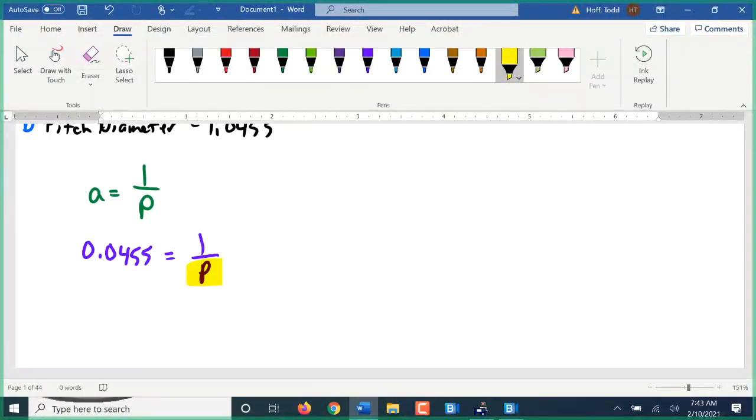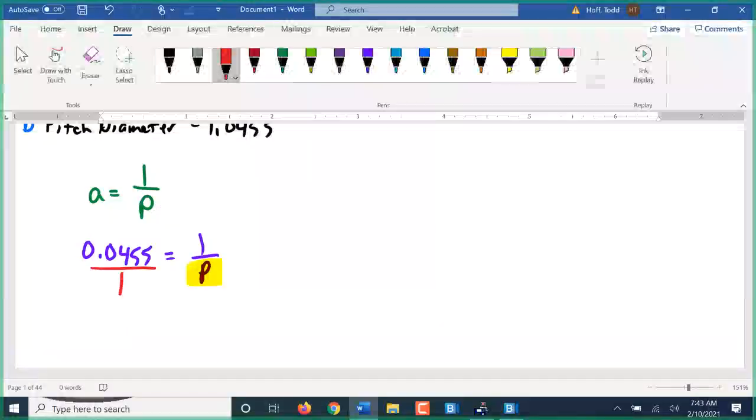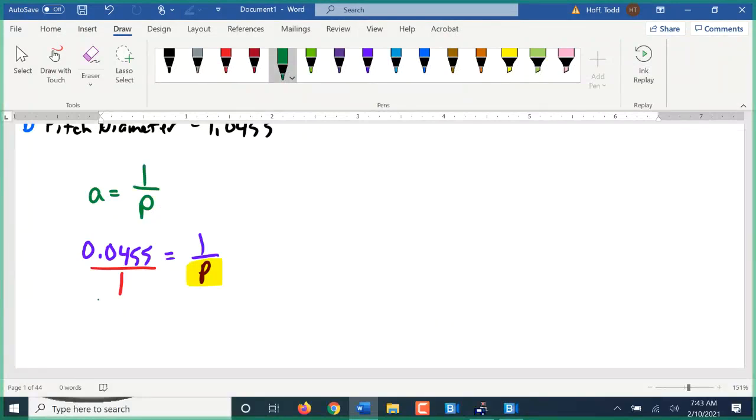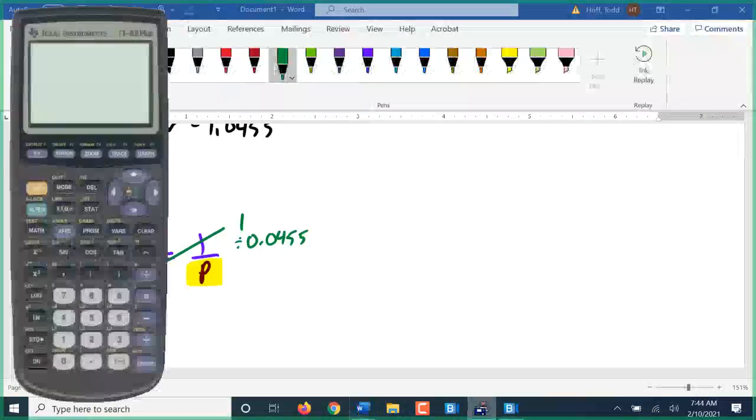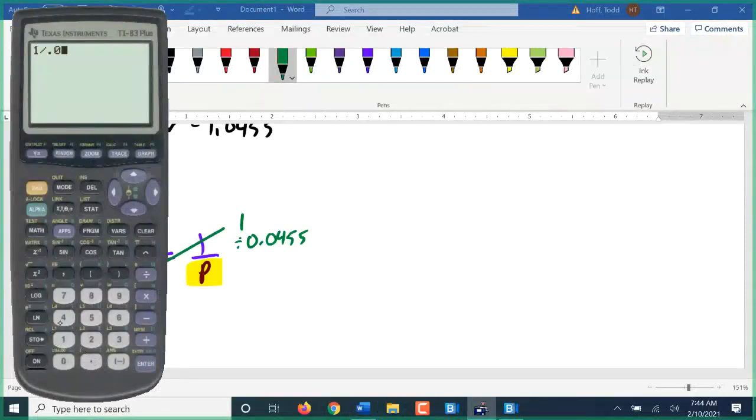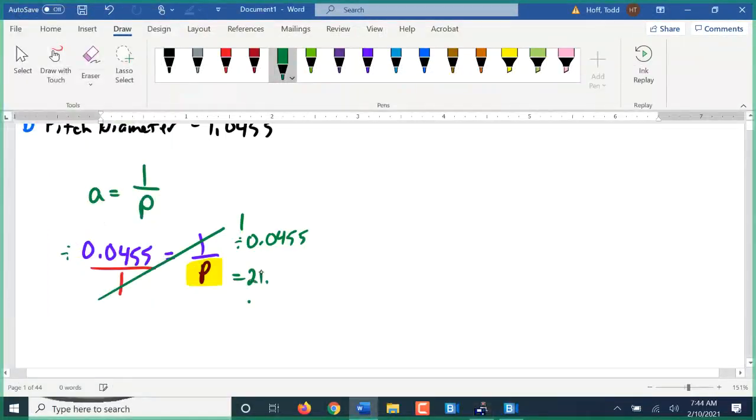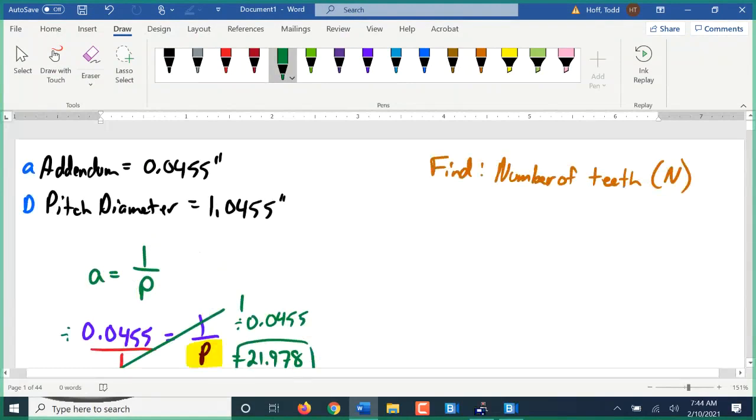The reason I wanted to do this problem is there's a shortcut we're going to use, especially when we get into the trig functions. That's simply to make it into a proportion. Now we can solve this for P by simply cross multiplying and dividing. 1 times 1 divided by 0.0455 gives us P equals 21.978.